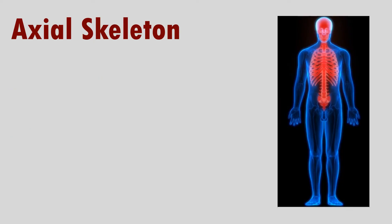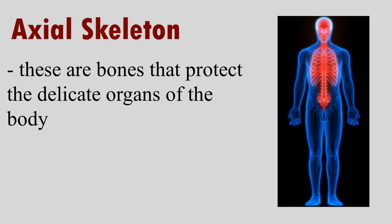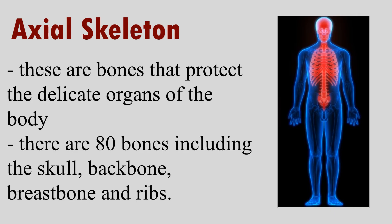The Axial Skeleton. These are bones that protect the delicate organs of the body. There are 80 bones, including the skull, backbone, breastbone, and ribs.